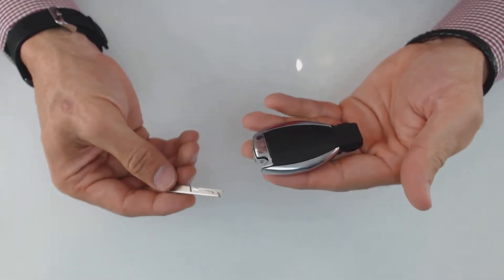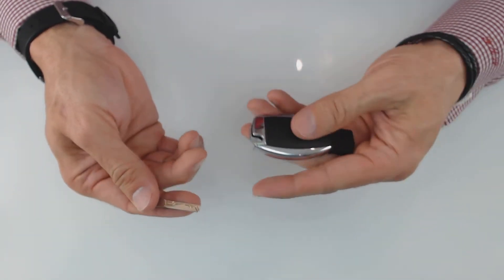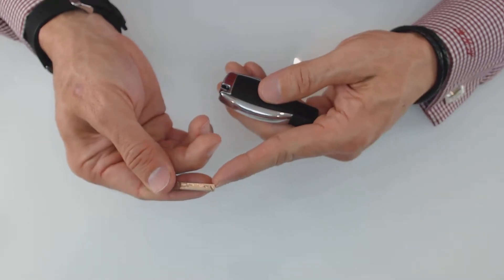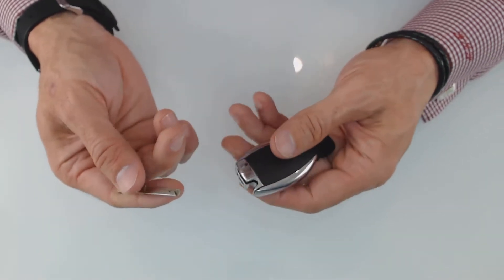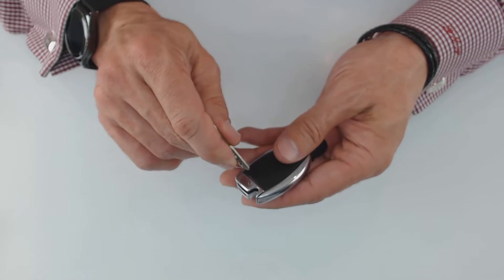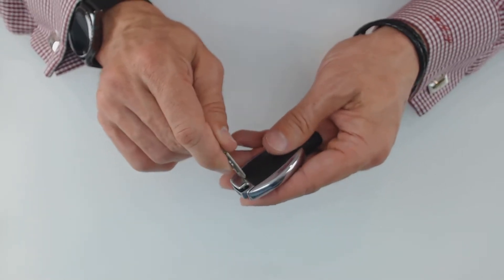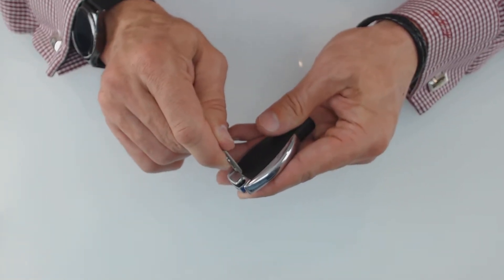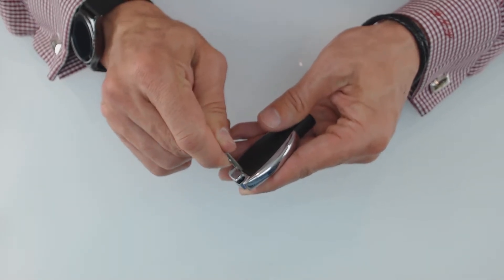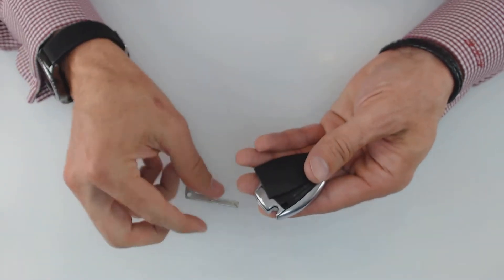Hold the key fob in one hand, the valet key in the other. At the end of the valet key, there's a really tiny ridge. What I want you to do is take this and place it in between the plastic and the chrome. You're going to hear a little pop, but be gentle. Hear that? Pop the cover off.